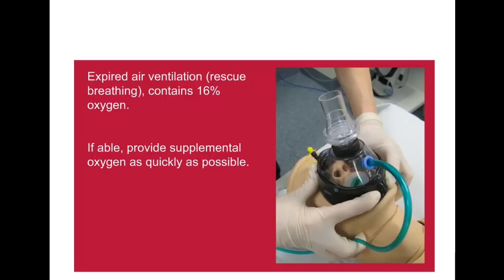After the return of spontaneous circulation, peripheral readings of saturations are far more reliable and oxygen can be titrated with confidence. There is some data indicating an association between hyperoxaemia after return of spontaneous circulation and worse outcomes. When blood oxygenation saturation levels can be measured reliably, peripheral saturation should be maintained at 94% to 98%, or 88% to 92% if the patient has COPD.